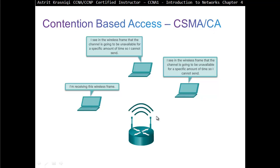With CSMA/CA, the client sends a Ready To Send message, and the wireless device controls who can send and when. The client sends to the wireless controller saying 'I'm ready to send,' and the wireless device sends back 'you are clear to send,' and then the client can start sending. If there's been a collision, they can't detect it — they can only try to avoid it.